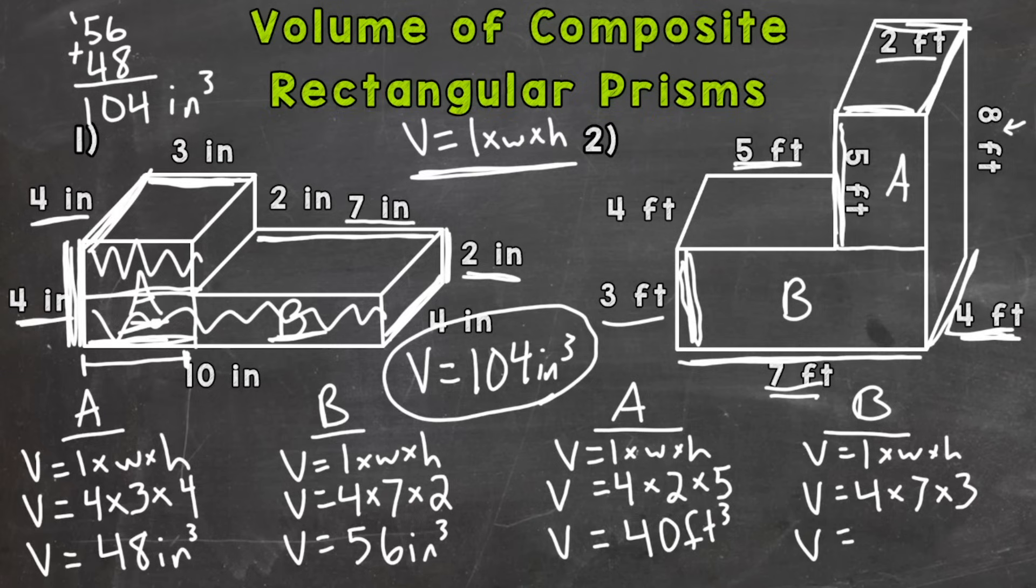So four times seven is 28. And then 28 times three is 84 cubic feet. So we get to 40 plus 84, which is going to give us 124 cubic feet. So I'm going to write it inside of our composite rectangular prism here because I'm running out of room. So 124 cubic feet.